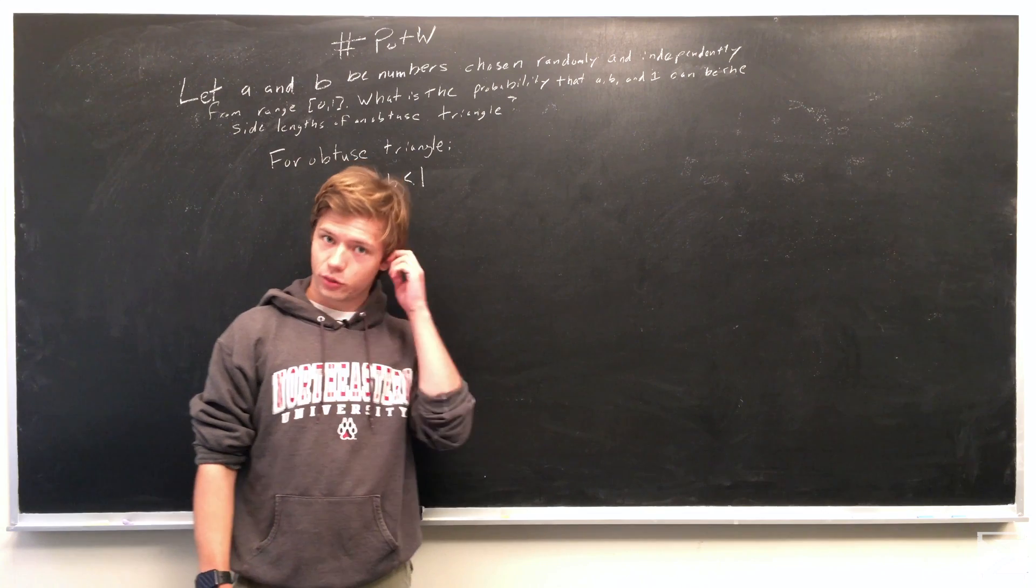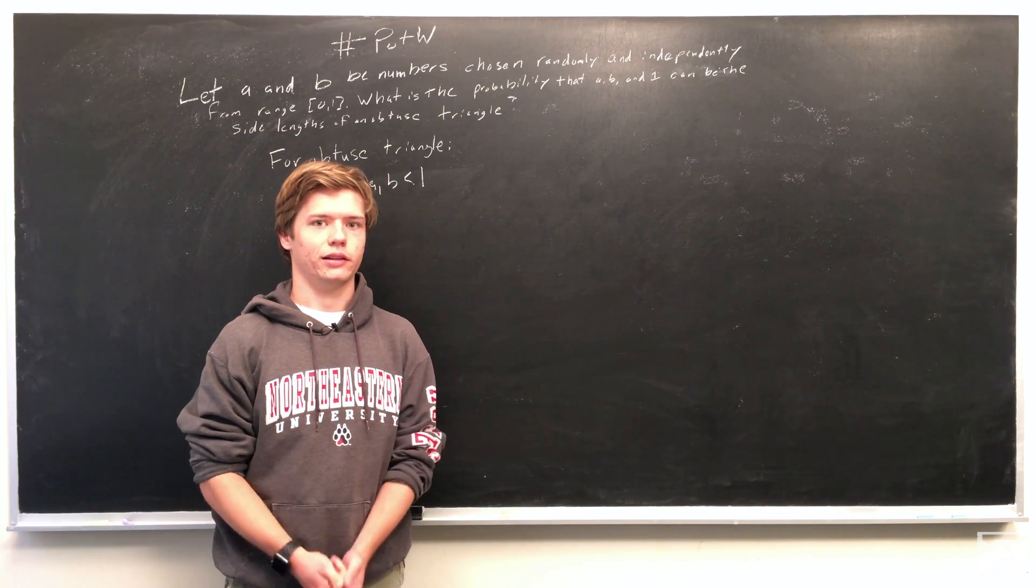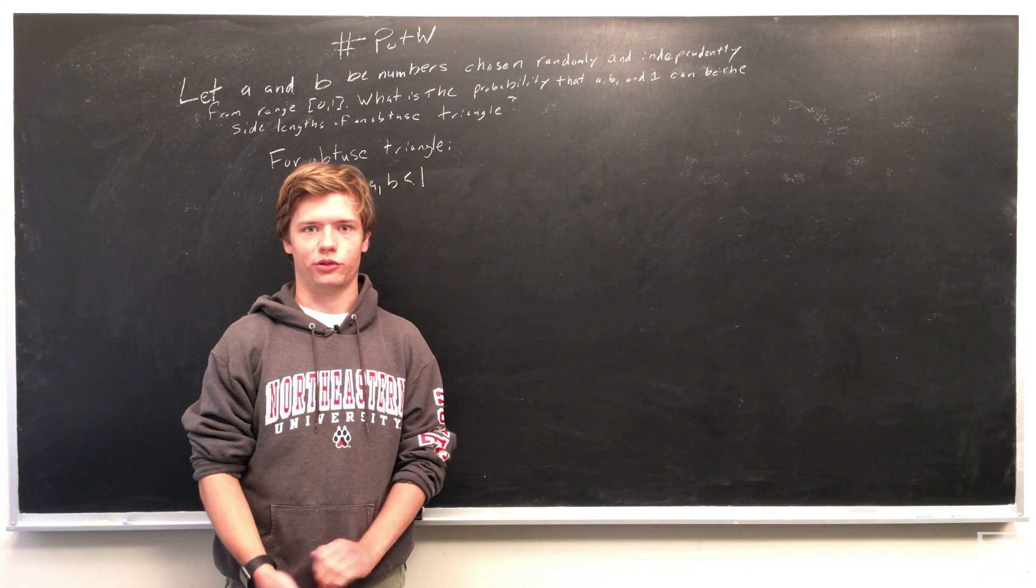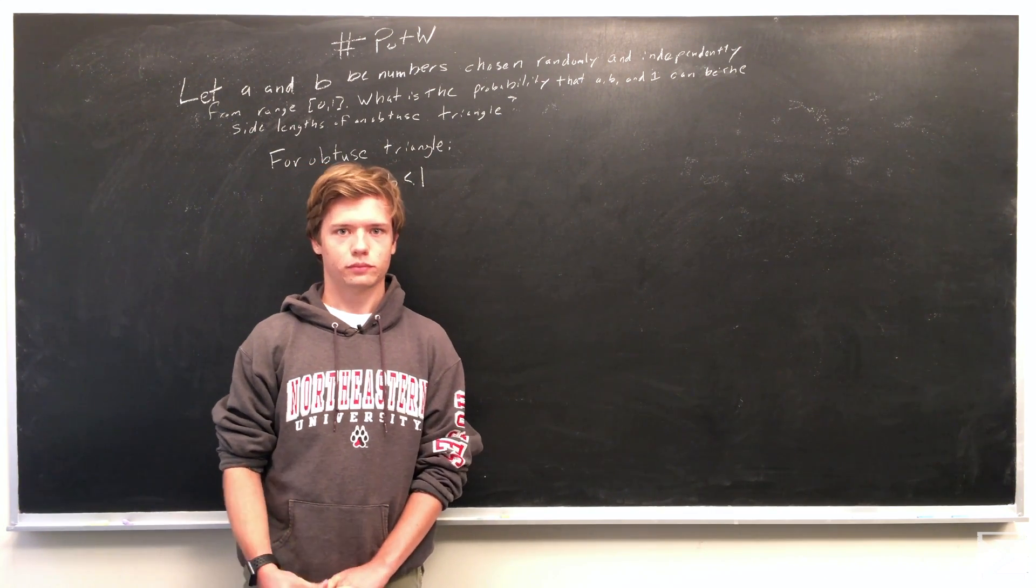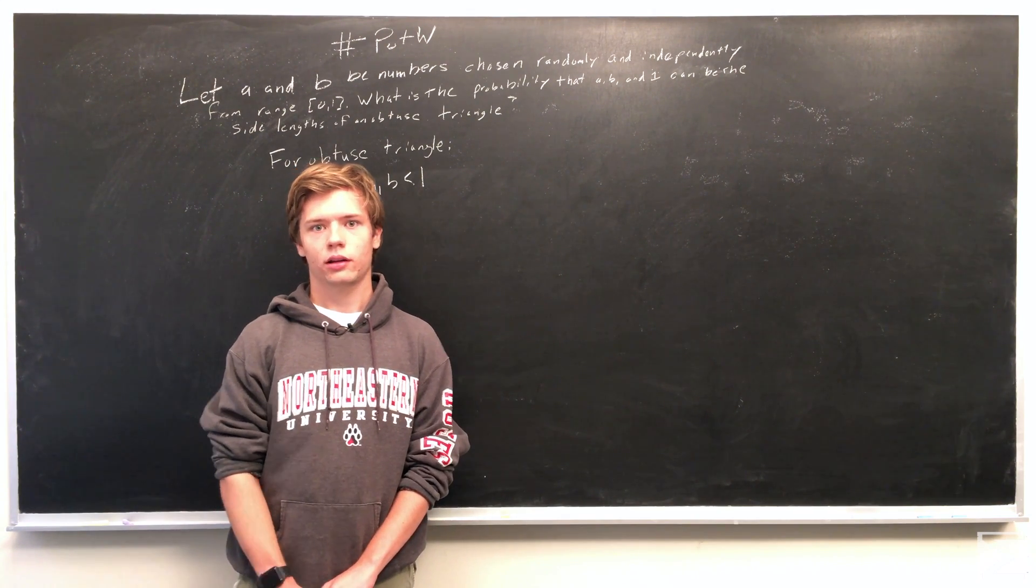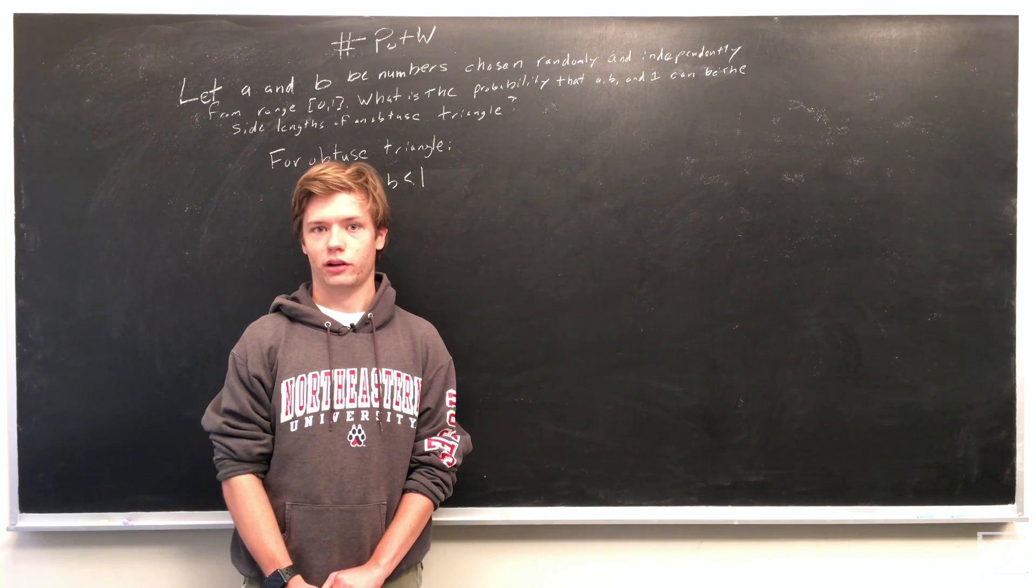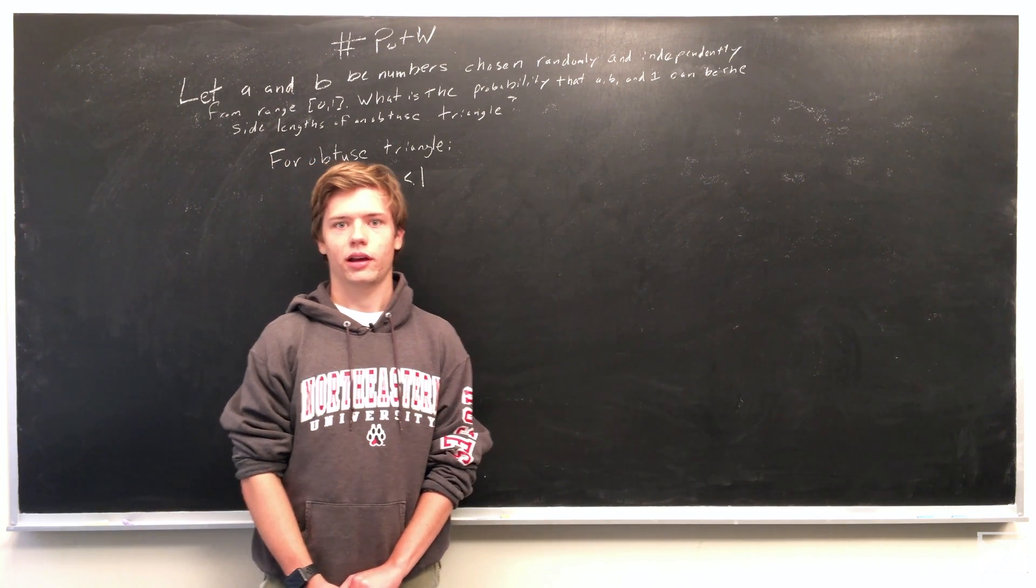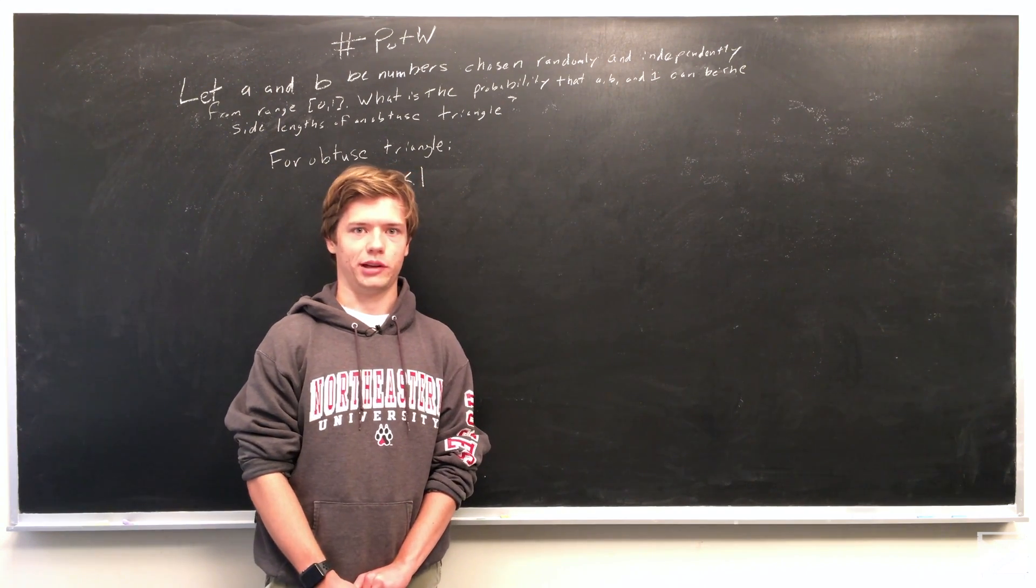Now there are two more properties that we have to consider, or that we need A and B to have in order for an obtuse triangle to be formed. The first property is that A plus B has to be greater than 1. If A plus B were less than or equal to 1, then we wouldn't have a triangle. So to have the triangle, we need that property.